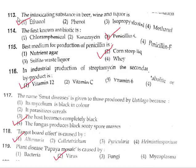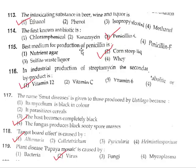Question 113: The intoxicating substance in beer, wine, and liquor is ethanol. Option 1. Question 114: The first known antibiotic is penicillin G. Option 3. Question 115: The best medium for production of penicillin is corn steep liquor. Correct answer is option 2.